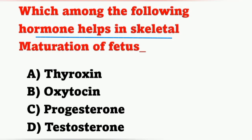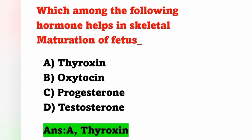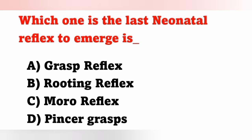Next question: Which hormone helps in skeletal maturation of the fetus? Options: A) Thyroxin, B) Oxytocin, C) Progesterone, D) Testosterone. The hormone that helps in skeletal maturation of the fetus is thyroxin. Option A is the correct answer.